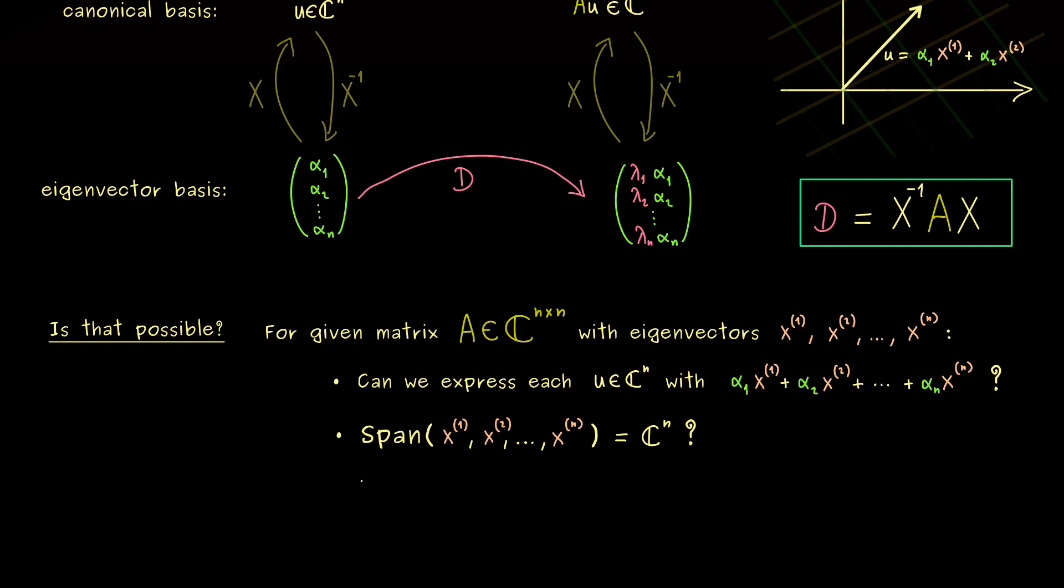But now we also see, if the span here is equal to C^n, these vectors form a basis. Therefore, an equivalent question would be, do these eigenvectors of A form a basis of C^n.